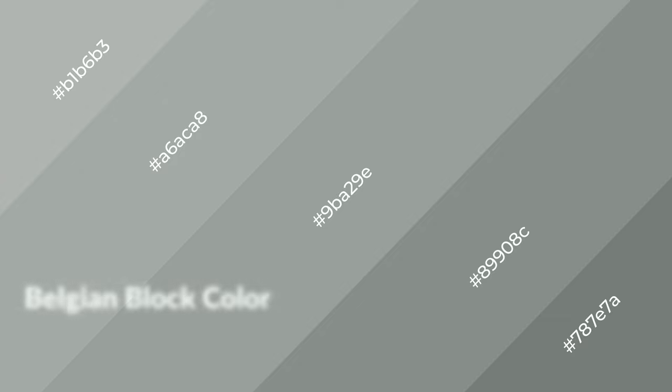To generate shades of a color, we add black to the color, and it is used in patterns. 3D effects, layers and shades create depth and drama. Belgian block is a cool color.